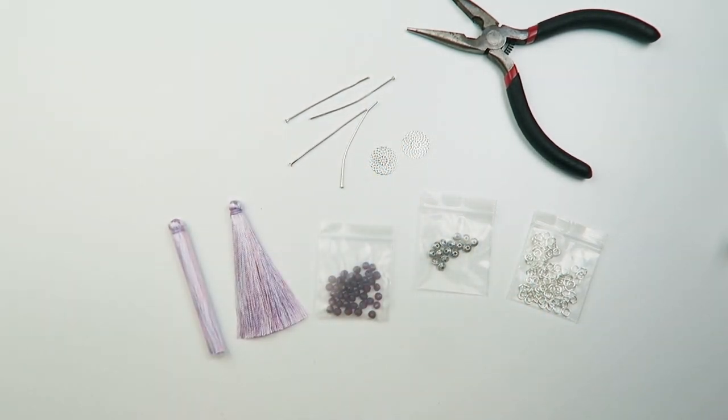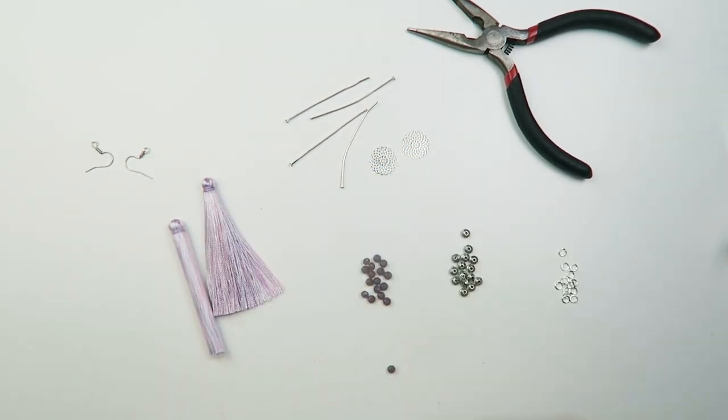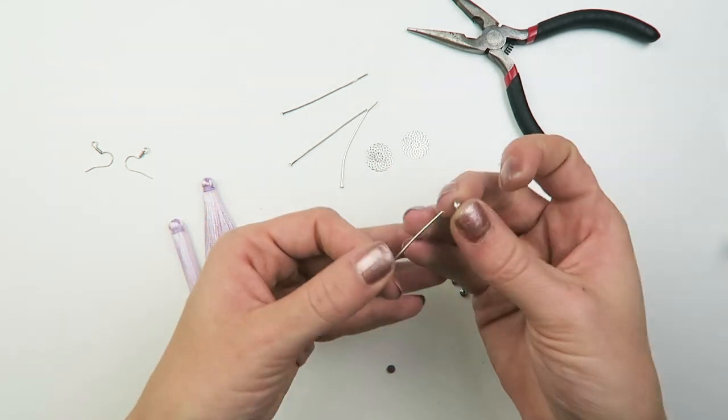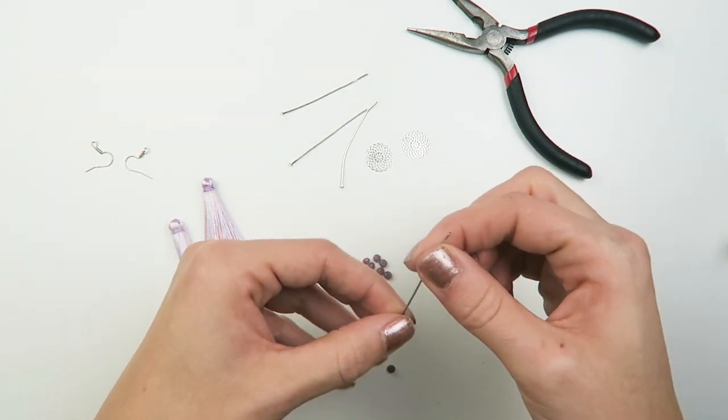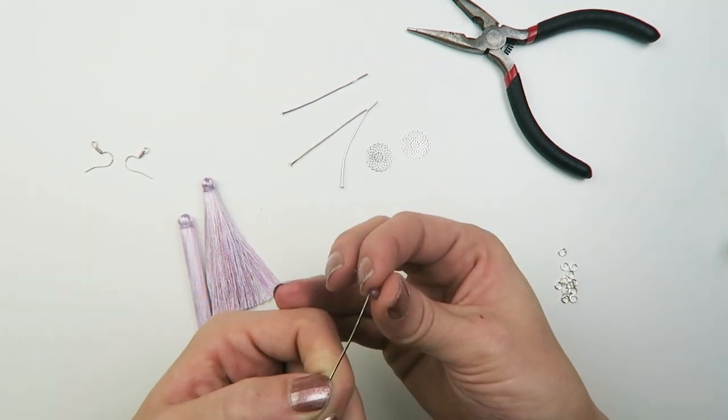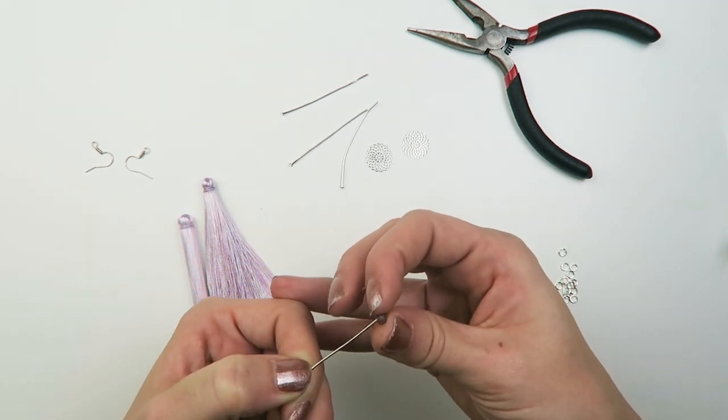So I'm just going to get all my materials. And we're going to start with our head pins. I'm going to put one tassel here in the middle and two small charms on each side, which I'm going to make myself using these head pins. And I'm just going to put on a spacer bead and a faceted bead.